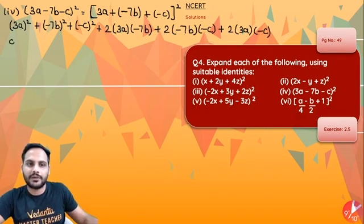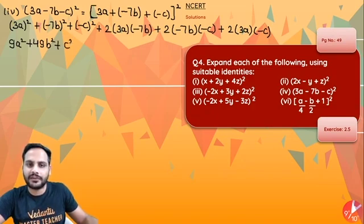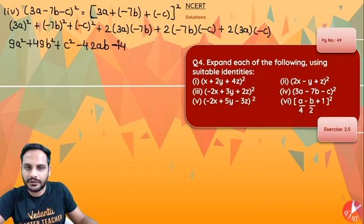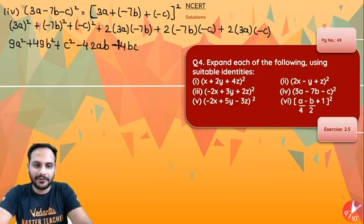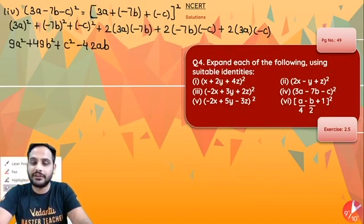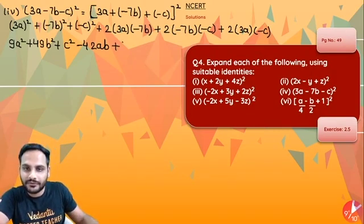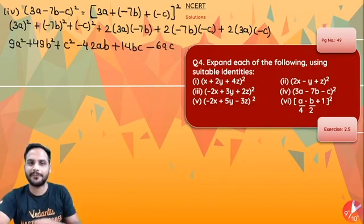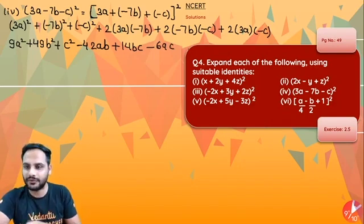So it will be equal to: 9a² + 49b² + c² (negative squared is positive). Now 2×3×(−7) = −42ab. For the bc term: (−7b)×(−c) is negative×negative = positive, so +14bc. And 2×3×(−c) = −6ac. So the expansion of the fourth part is 9a² + 49b² + c² − 42ab + 14bc − 6ac.